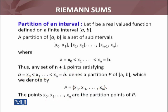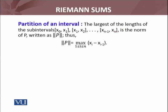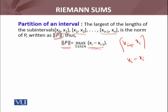So a partition is any set of n+1 points satisfying this condition, and it defines a partition P of [A, B], which we denote as the set {x₀, x₁, x₂, ..., xₙ}. Here x₀ is the starting point A and xₙ is the end point B. These points x₀ through xₙ are the partition points of partition P. The largest of the lengths of the sub-intervals is called the norm of the partition, represented as P-norm equals the maximum of (xᵢ − xᵢ₋₁). This maximum value over all the intervals is the P-norm.